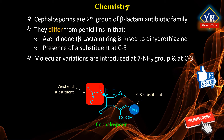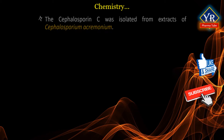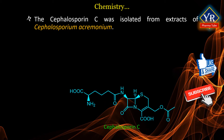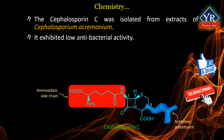As 6-APA became the precursor for the synthesis of all semisynthetic penicillins, so does the corresponding 7-aminocephalosporonic acid (7-ACA) serve the analogous function for the cephalosporins. The first member of cephalosporins is cephalosporin C, which is isolated from extracts of Cephalosporium acrimonium. It contains an amino-adipic acyl group at position 7 and an acetoxymethyl group at position 3, but exhibited disappointing antibacterial activity.